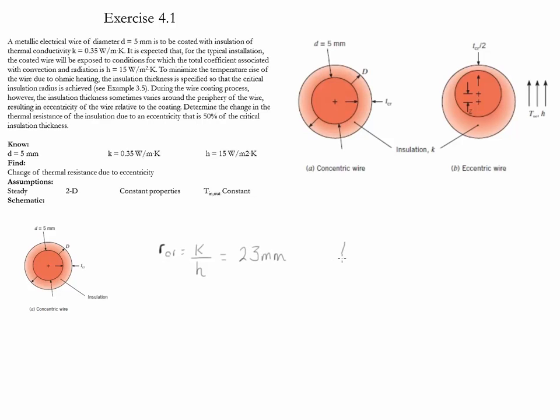Using this information, we could find out the critical thickness, which is basically the critical radius minus the radius that we currently have, and gives us that the critical thickness is equal to 21 millimeters.